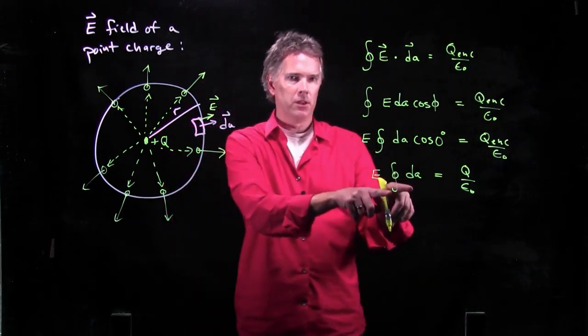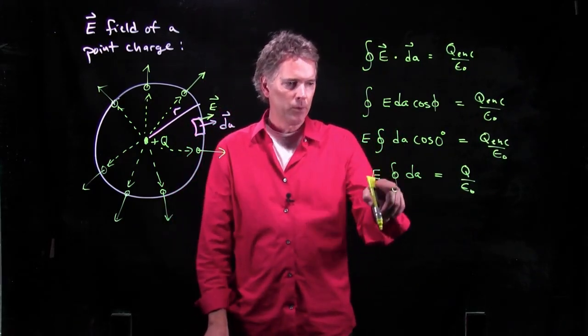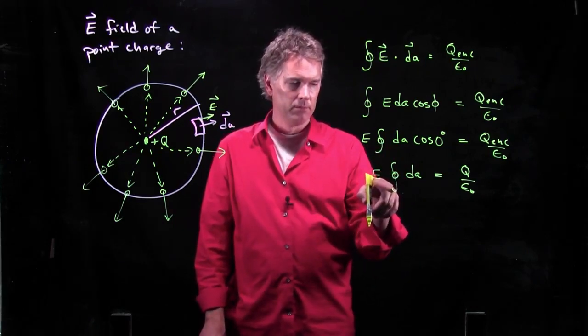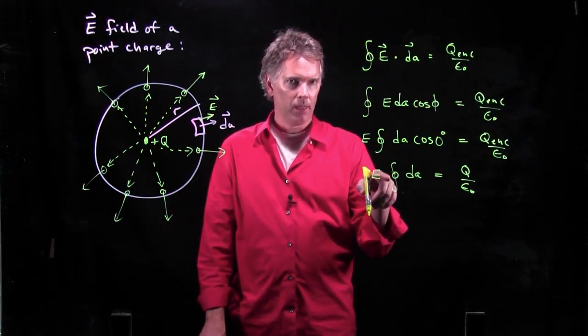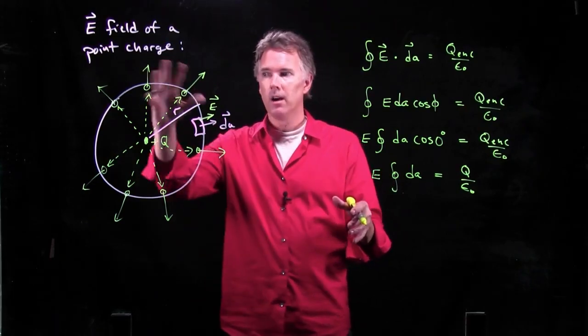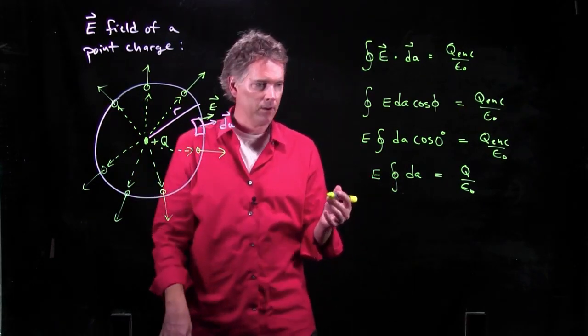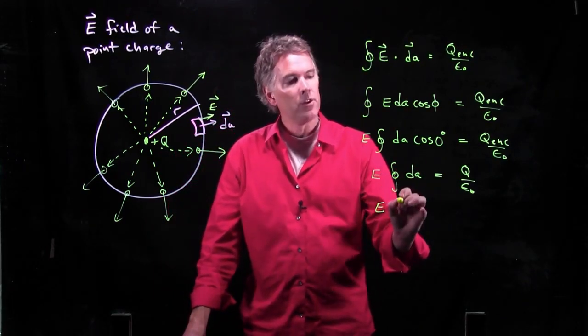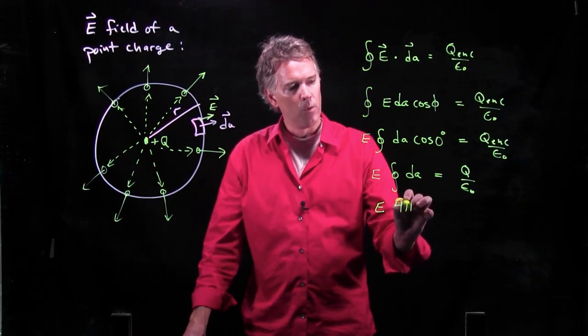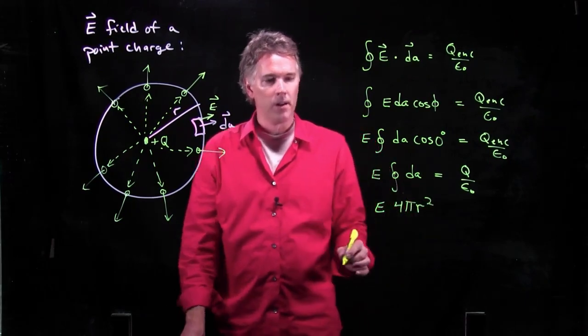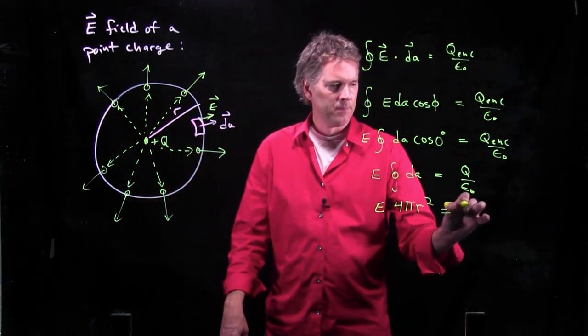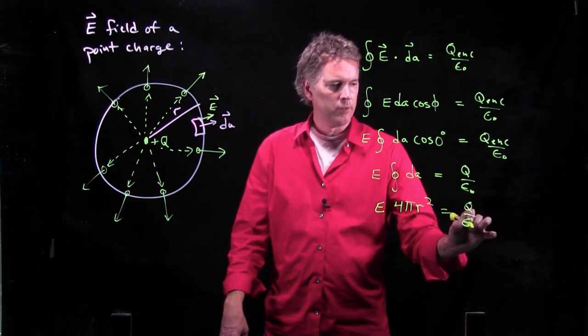And now look at this right here. Integral of dA, closed surface integral. What does that mean? That is the area of the sphere. The surface area of the sphere, right? Pretty cool. Because that whole thing just becomes 4 pi r squared. That's the surface area of a sphere. Equals q over epsilon not.